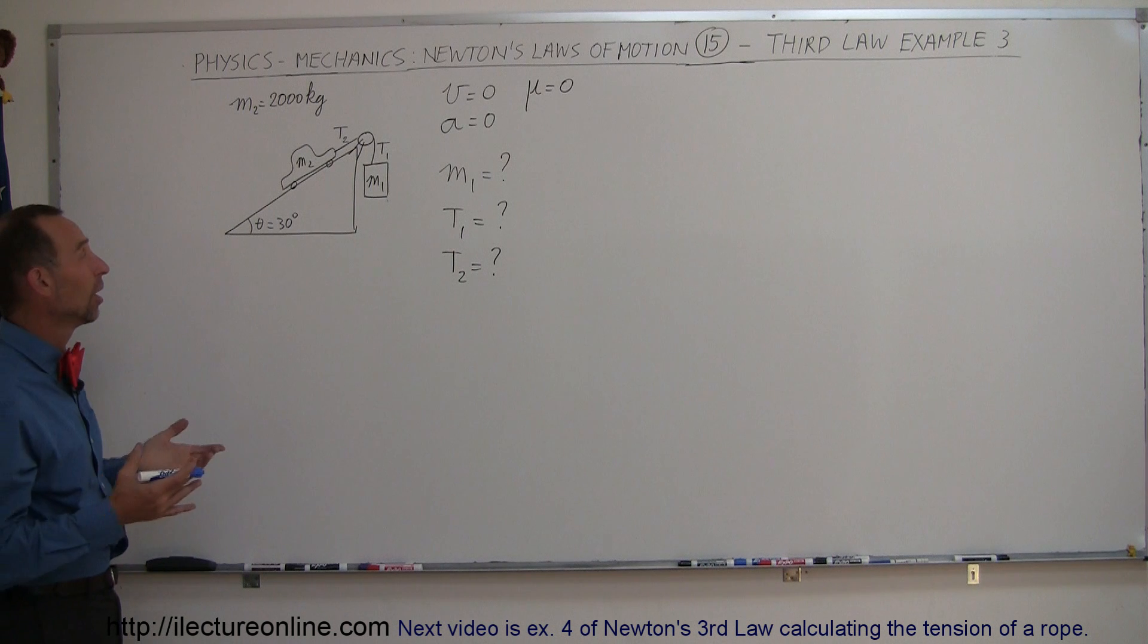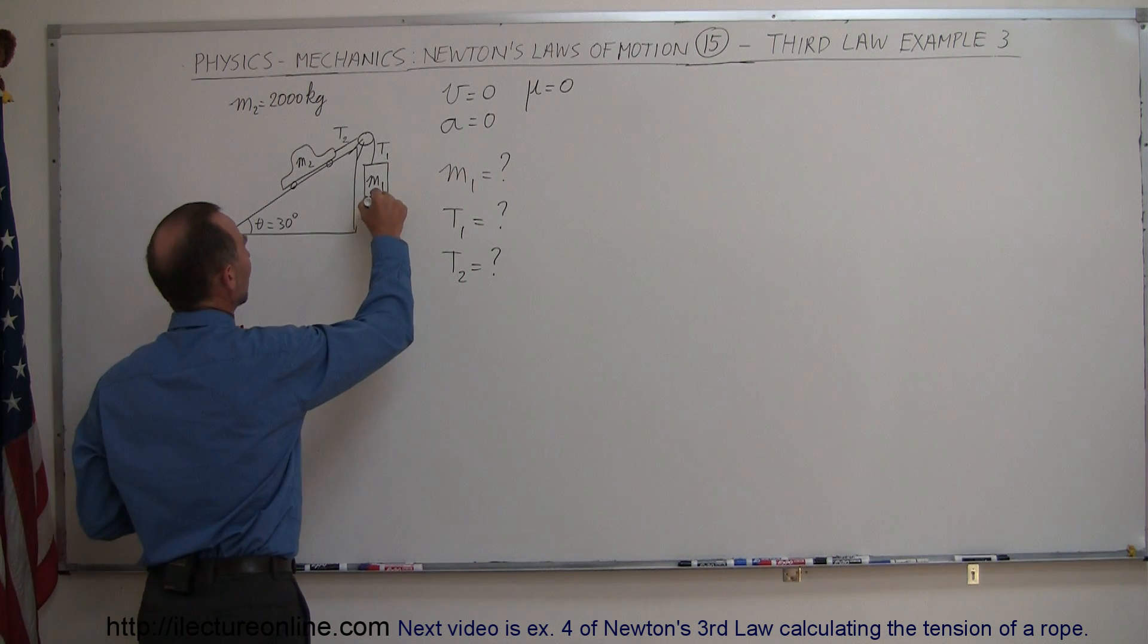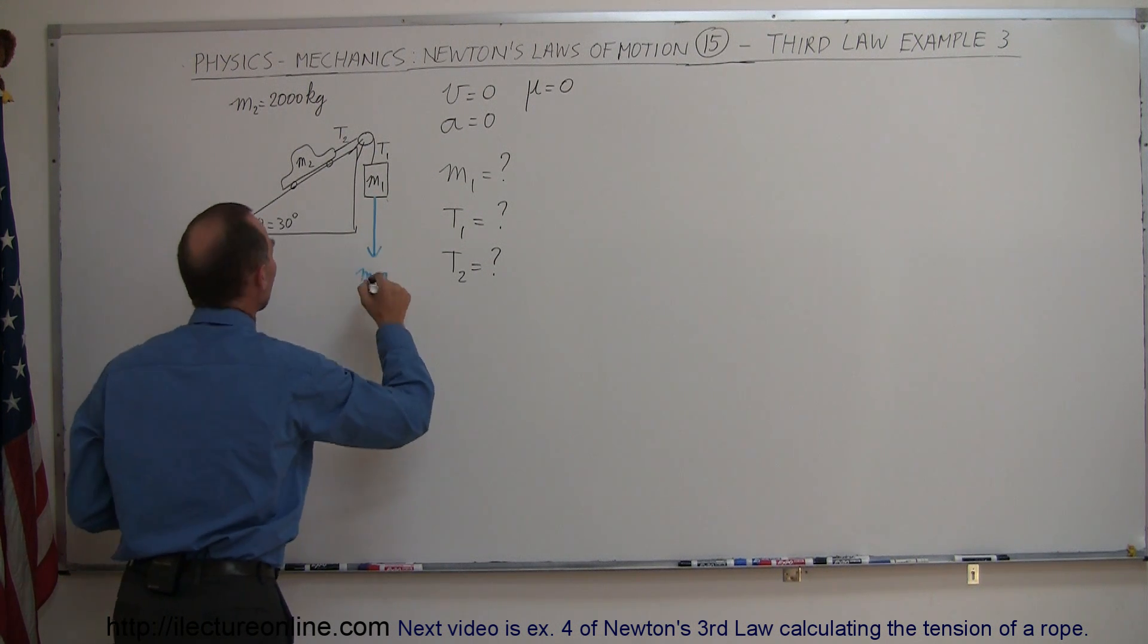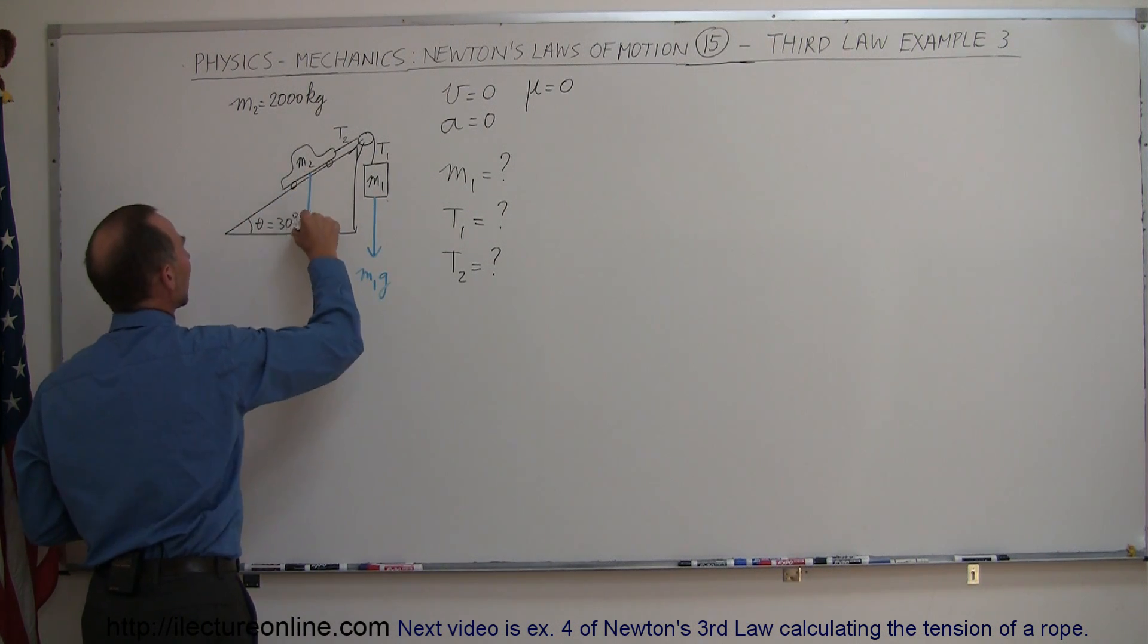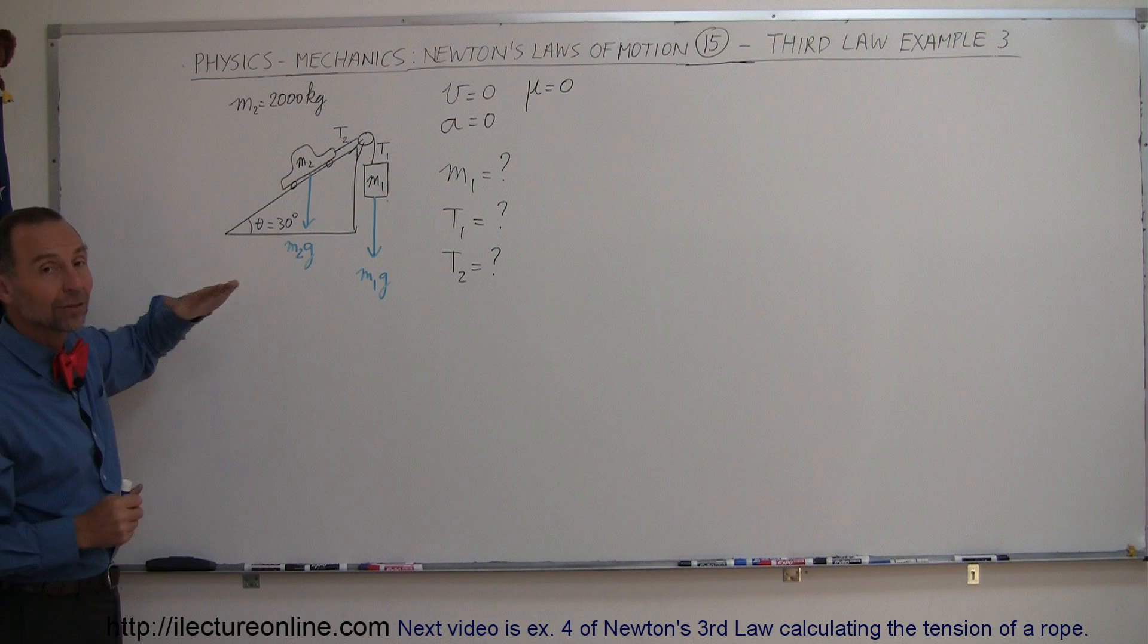First of all, let's start drawing all the forces acting on M1 and M2. So here we can see that we have the weight of M1 pulling down. This would be M1G, and here we have the weight pulling down. This is M2G. Now, in the case of the car being on the incline, there's of course a force pushing back.